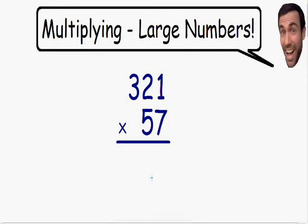Welcome to my video on multiplying large numbers. Let's get started right away. Here we have 321 being multiplied by 57. The basic idea is to multiply all of the numbers on the bottom with all of the numbers on top. Let me show you what I mean by this.